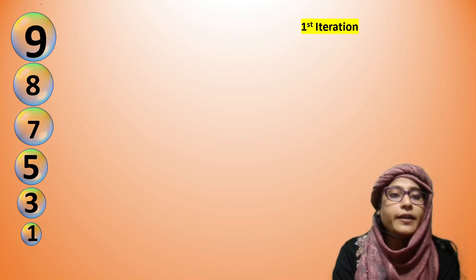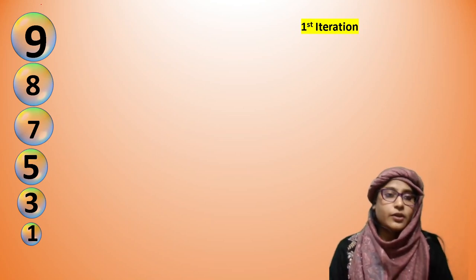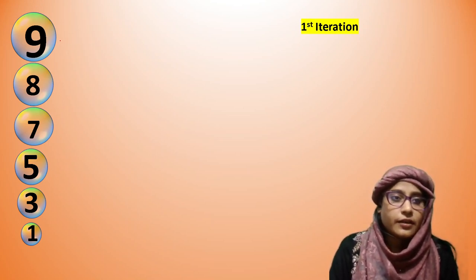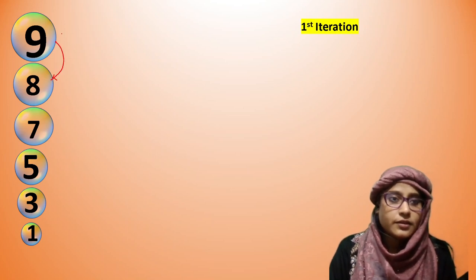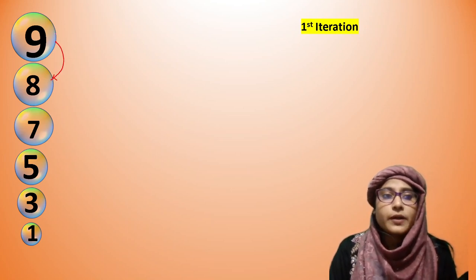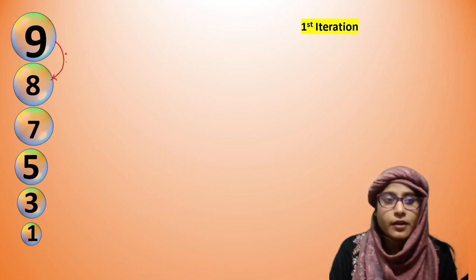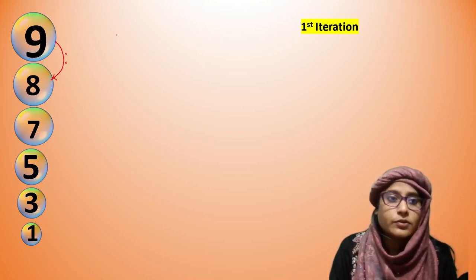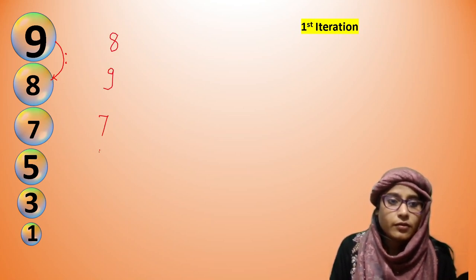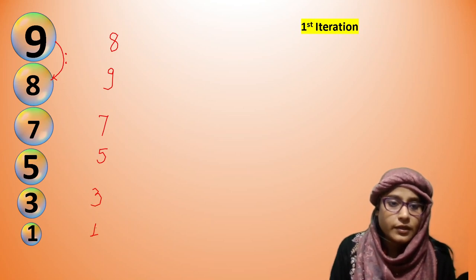Here is 9. We need to check: 9 is greater than 8 — yes, so swap. After swapping, here is 8 and here is 9, then 7, 5, 3, 1. Again, the pointer moves here, and we check 9 and 7. Is 9 greater than 7? Yes — so we do swapping again.